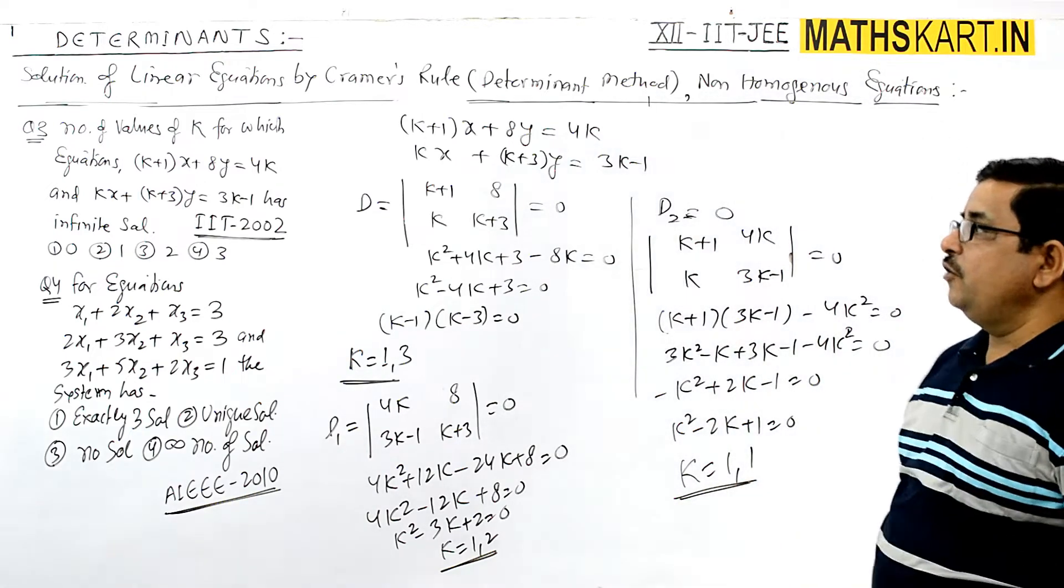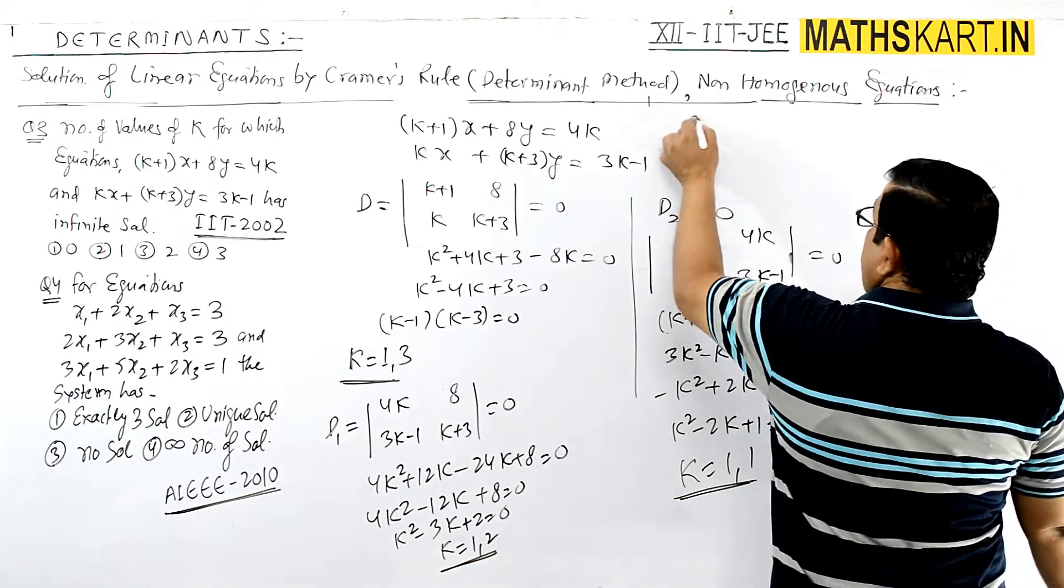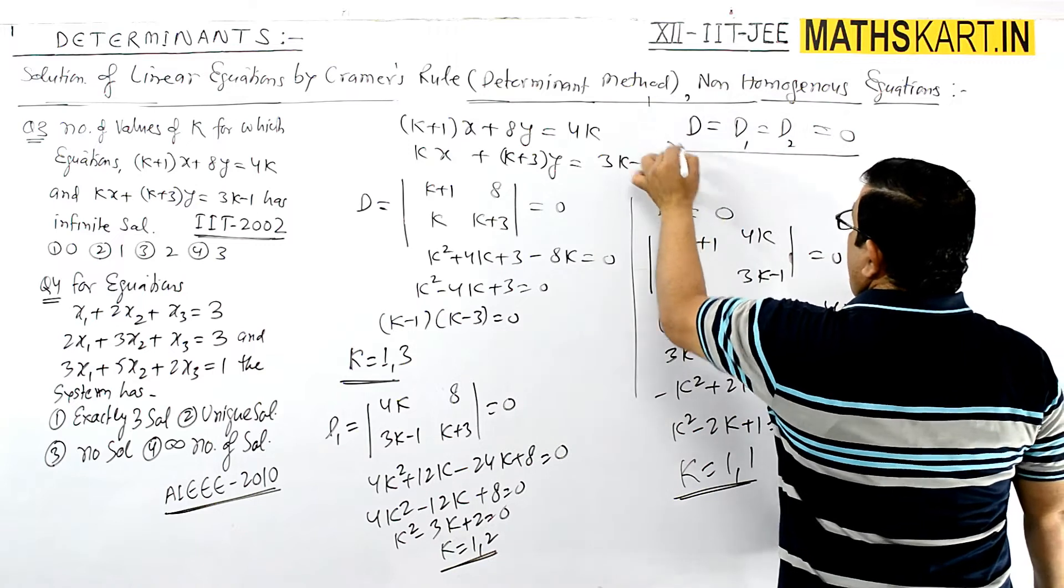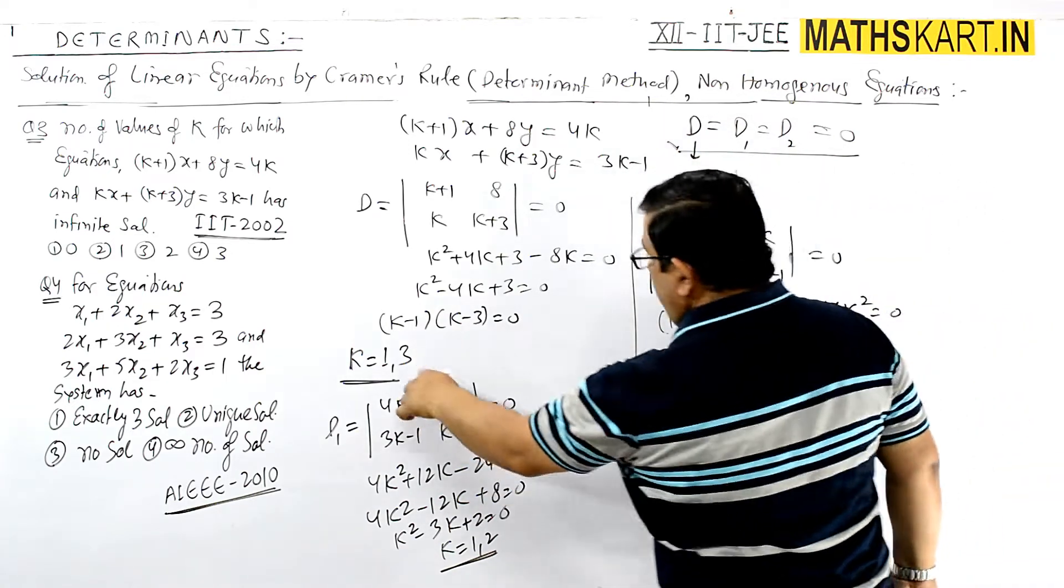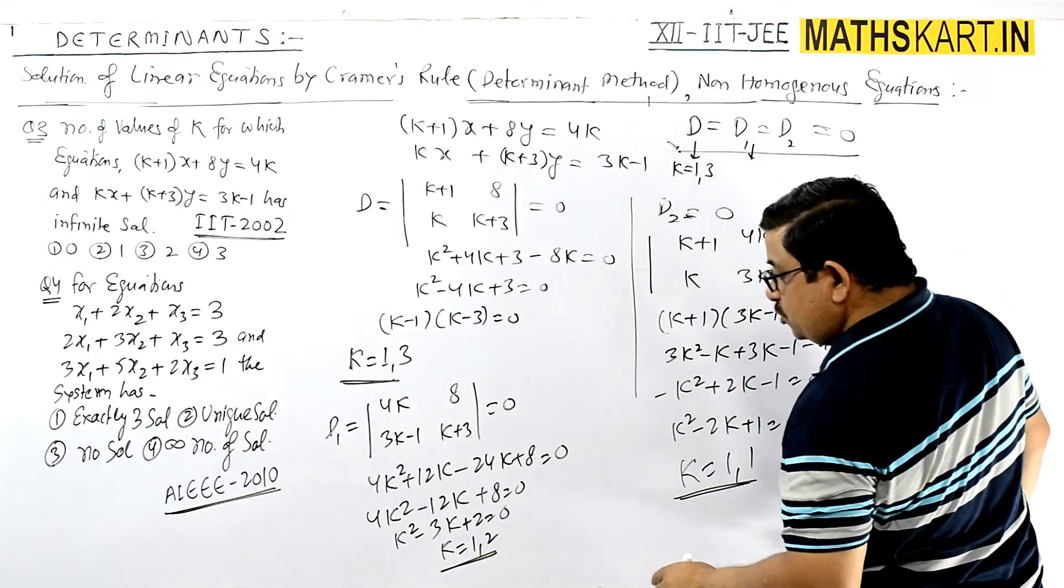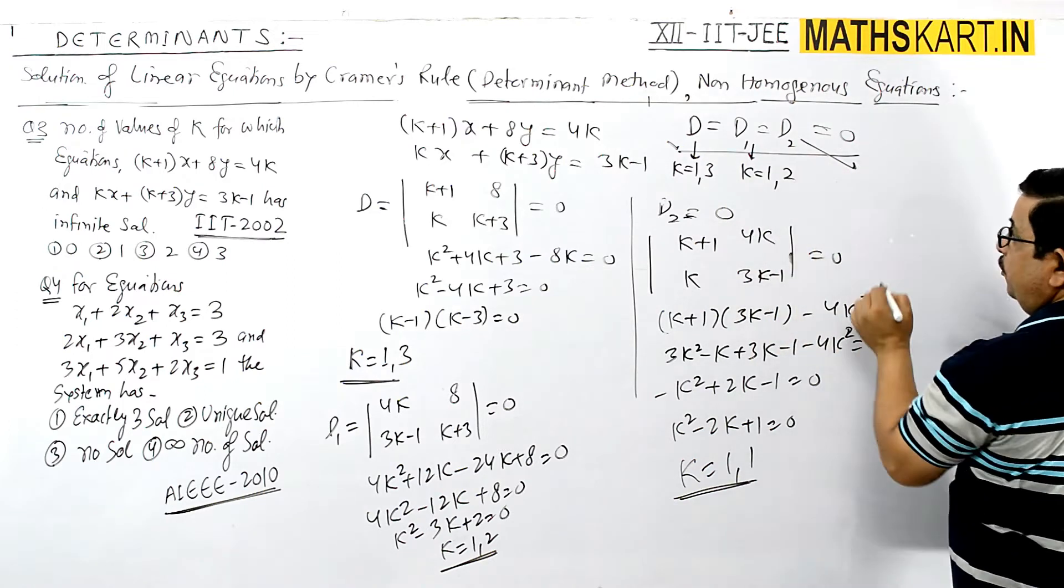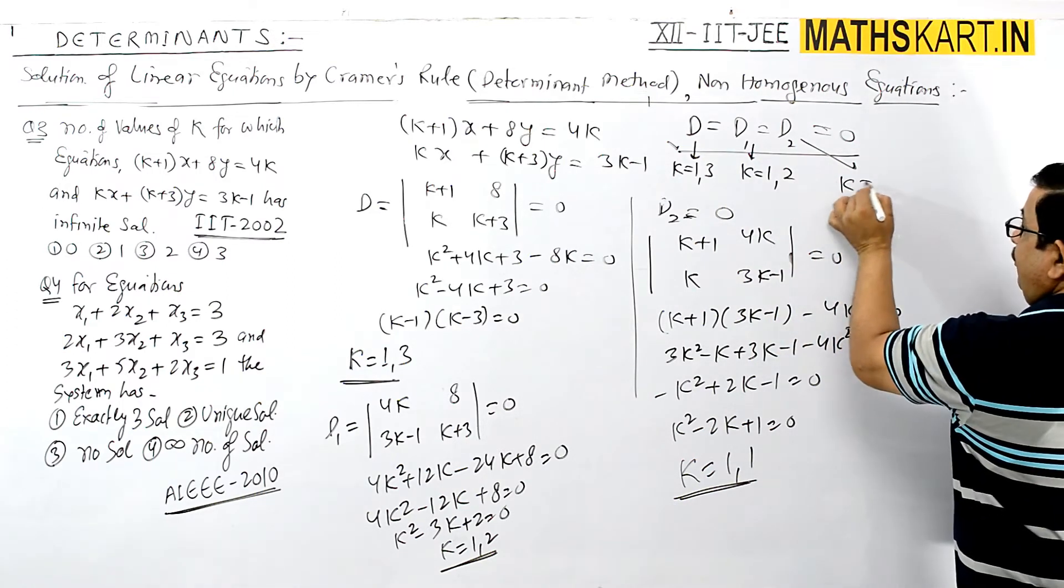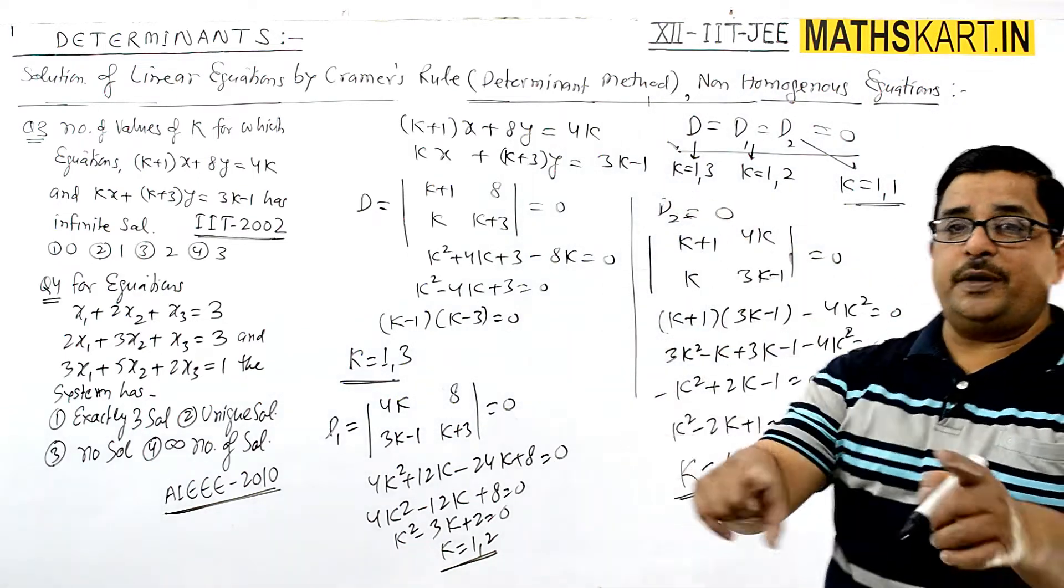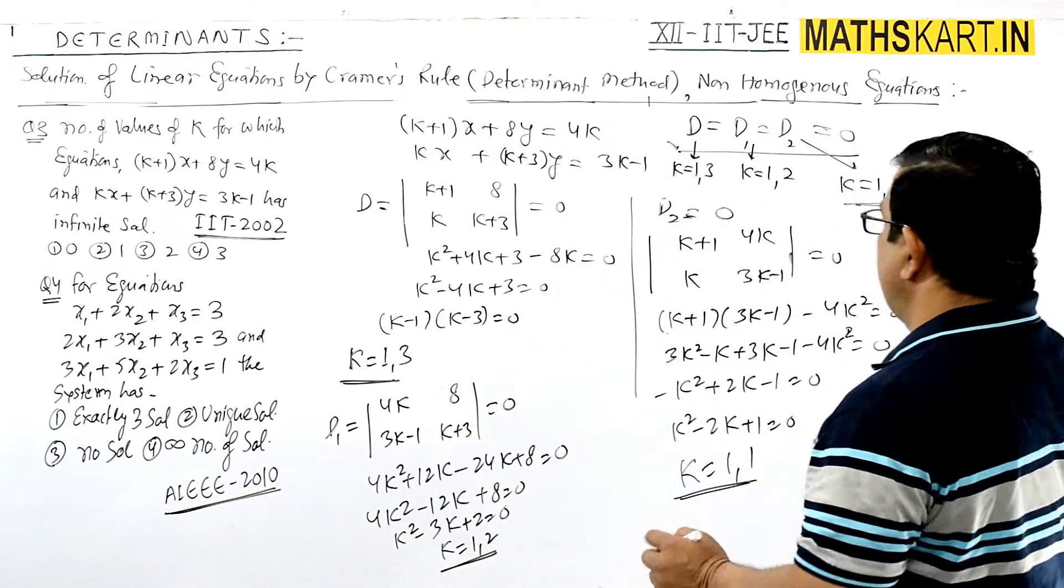All three determinants must equal zero. Therefore, k must satisfy all three conditions simultaneously, which means k = 1 is the only value.